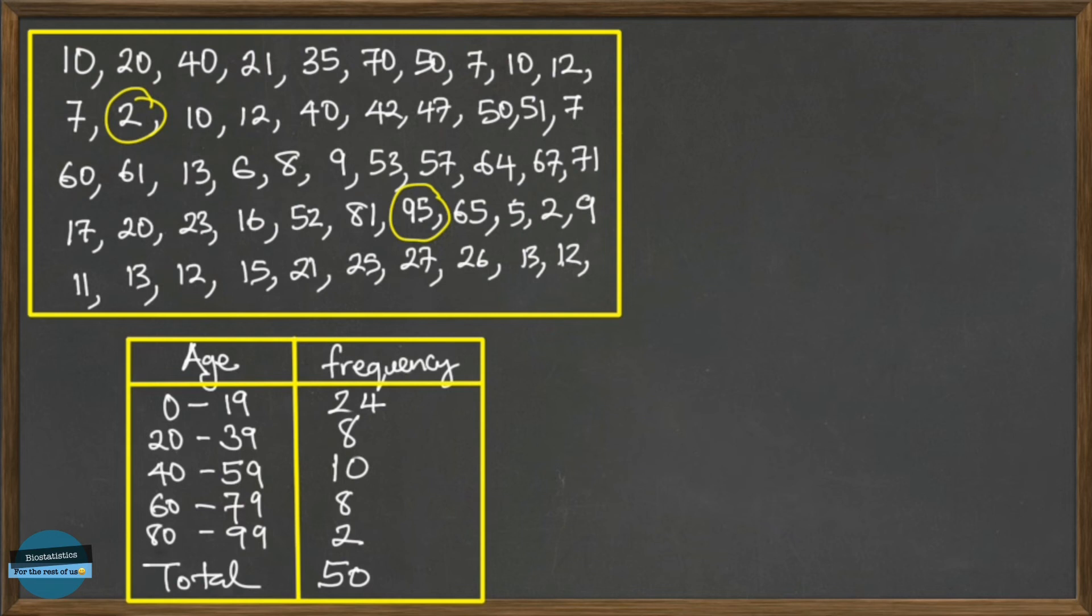It's not giving us any summary in that way. This is the reason why you need to use grouped frequency. Instead of using the unique values in this situation, we decide to use what we call classes, so where the data is grouped into classes: 0 to 19, 20 to 39, okay.